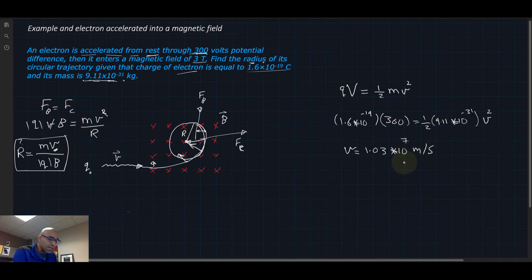So now we found the velocity, we take it and plug it here. I'm going to rewrite this equation again: mass times the velocity divided by Q times B.